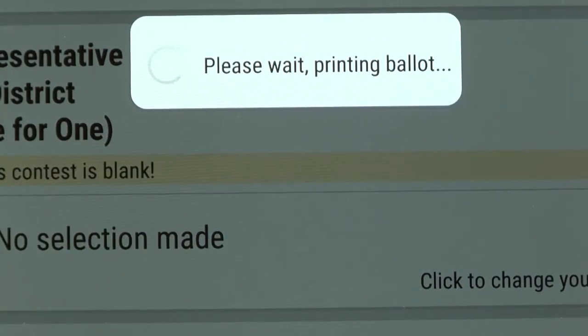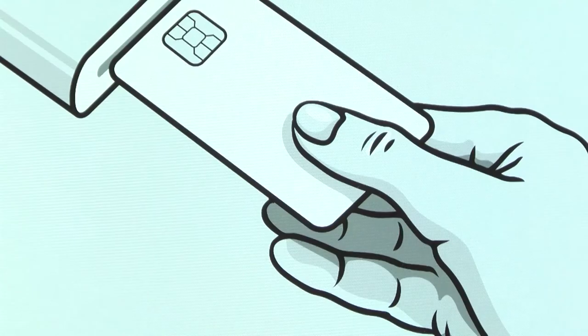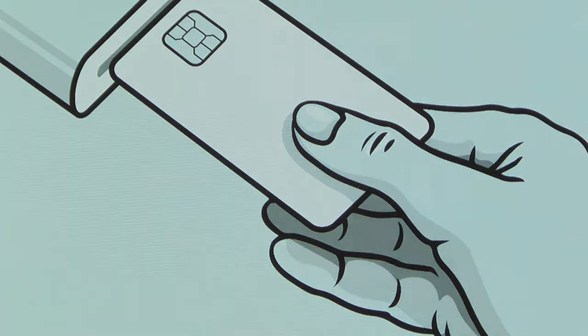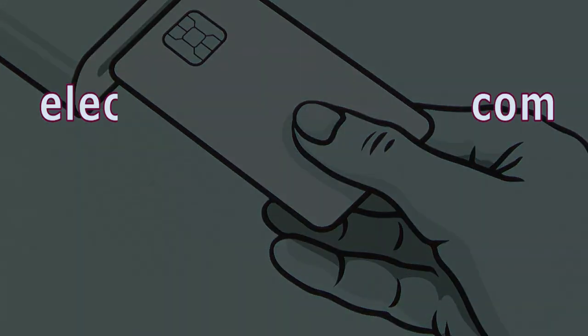Place your ballot in the secrecy sleeve and then cast it in the ballot box available. Your ballot is not considered voted until it is placed in the ballot box. Drop off your card with the ballot judge before you leave.